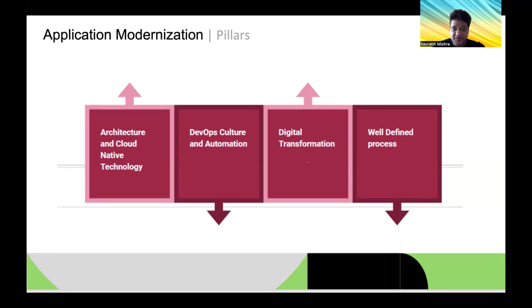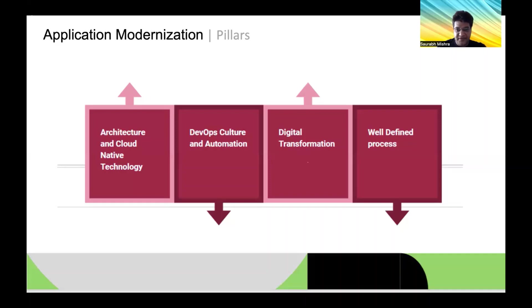The second pillar, also very important, is adopting a DevOps culture and automation. DevOps is a technology that combines the work of developers and operations, bridging the gap between them, and you need to achieve as much automation as possible. The third pillar is digital transformation — transforming your applications and disciplines — and the fourth is defining proper agile and well-defined methodology processes.